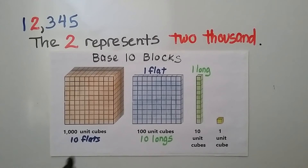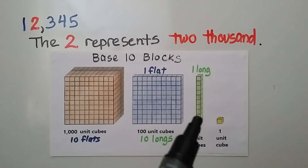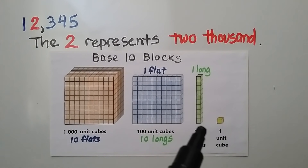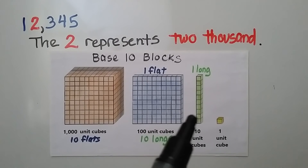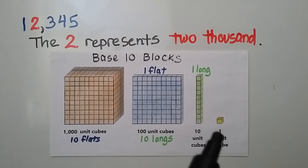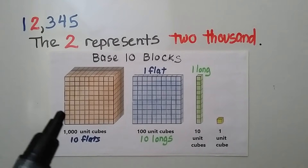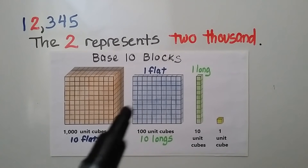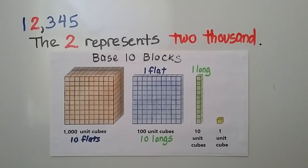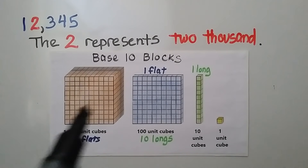Take a look at these models — these are base ten blocks. One little yellow cube is one; that's one unit cube. The green one is a long; it's ten of these little cubes. The blue one is a flat, and it's the same as ten of these longs together, or one hundred unit cubes. This large orange one is one thousand unit cubes, the same as ten flats or one hundred longs. To represent two thousand, we would have two of these large orange cubes.